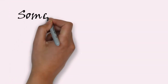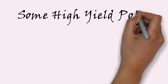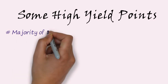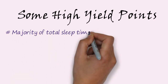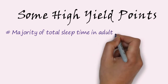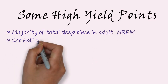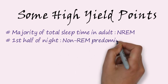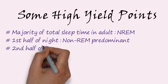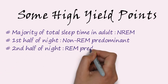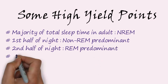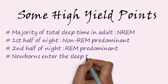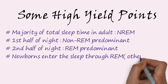Some high-yield points about sleep: the majority of total sleep time is spent in non-REM. During the first half of the night, non-REM is the predominant sleep stage, while in the second half of the night, REM sleep is predominant. Newborns enter sleep via REM, unlike other age groups which enter via N1.